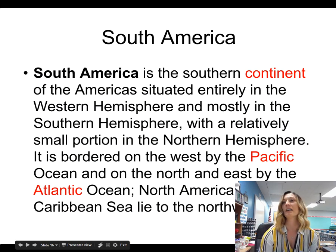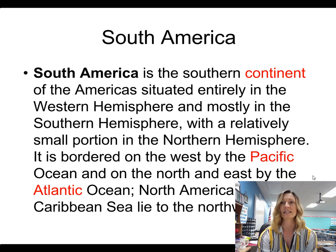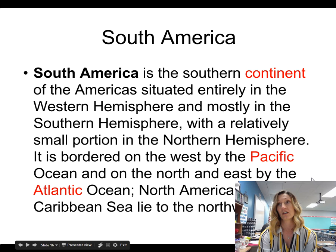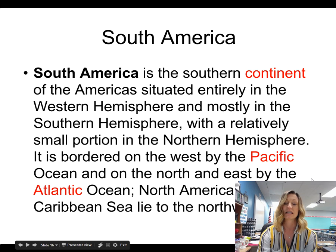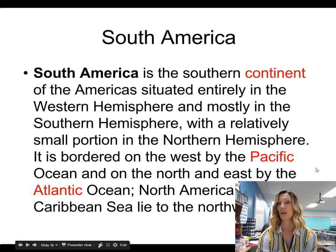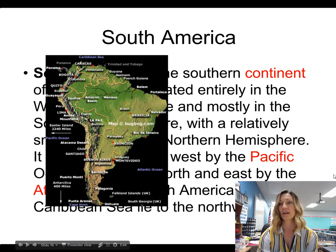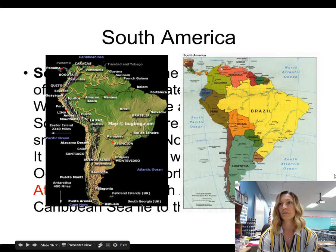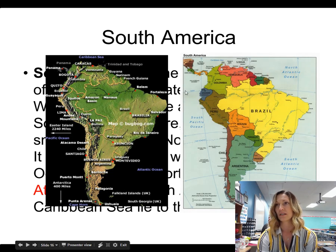South America. South America is the southern continent of the Americas, situated entirely in the Western Hemisphere and mostly in the Southern Hemisphere, with a relatively small portion in the Northern Hemisphere. Basically, the equator runs through the top part of South America. It is bordered on the west by the Pacific Ocean and on the north and east by the Atlantic Ocean. North America and the Caribbean Sea both lie to the northwest. Right here where my cursor is — that's the equator — so a small portion of South America is actually in the Northern Hemisphere.